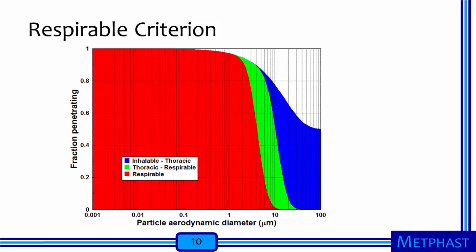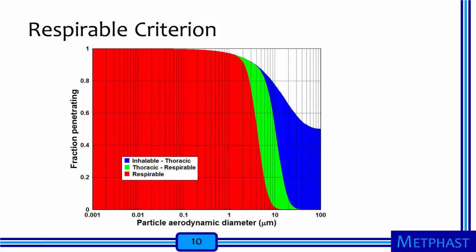The respirable criterion in red shows that no particles larger than 10 micrometers can reach the alveolar region. About half of particles 4 micrometers in diameter can penetrate into the deepest part of the lung, and most particles 1 micrometer and smaller can penetrate into the alveolar region. These criteria represent the particles in the air that enters each region of the respiratory system — the potential dose for particles in each part of the lung. The criteria do not represent particles that deposit in the respiratory system — the applied dose — because many particles will leave with exhaled air. These sampling criteria are very useful to occupational hygienists.